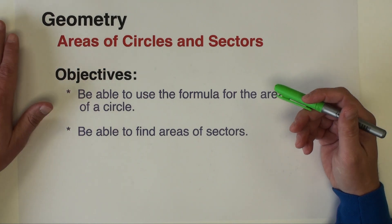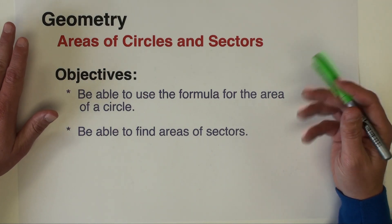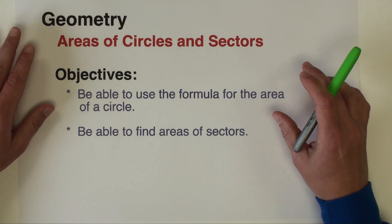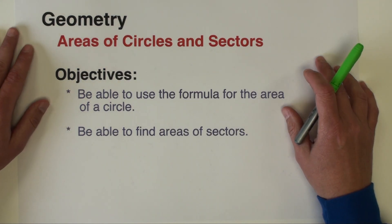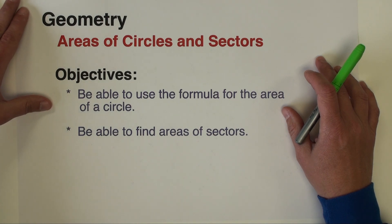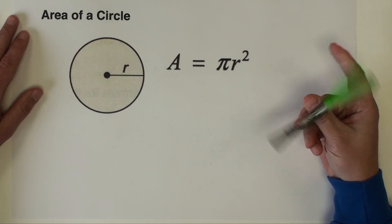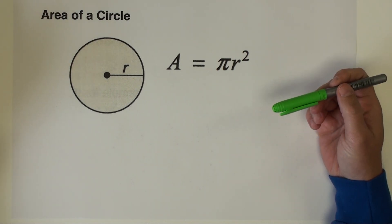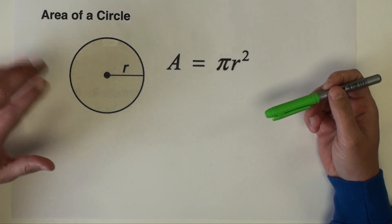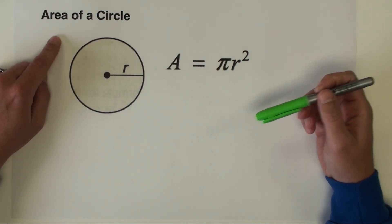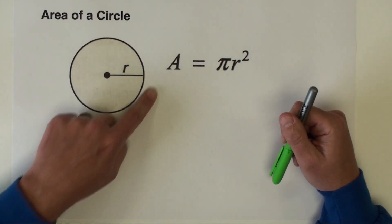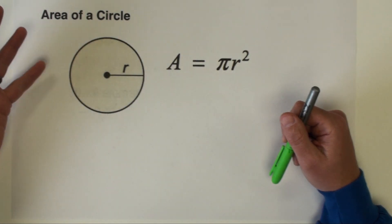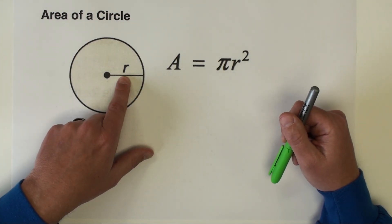It's going to be very similar as far as how we set up and solve problems, just we're going to be looking for areas instead of lengths today. Let's take a look at how to find area of a circle to get us started. All right, we begin with something that you all are probably quite familiar with. You've no doubt used this before in middle school on your way up to high school geometry. This is the area formula for a circle.